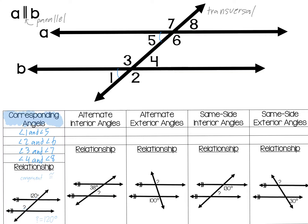Next we will consider alternate interior angles. What is an interior angle? An interior angle is an angle located between the two parallel lines, or on the inside of the two parallel lines. In this case the interior angles are 3, 4, 5, and 6.